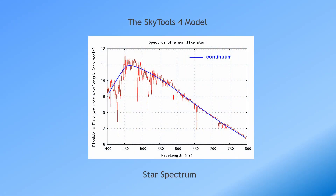So, how does it work? This is the spectral energy distribution of a sun-like star. Across the bottom is wavelength or color. Blue and ultraviolet are on the left, and red and infrared are on the right. The area under the curve is basically the signal that we want to record on our detector.